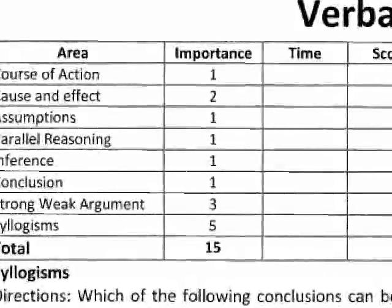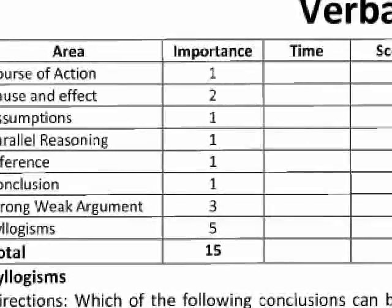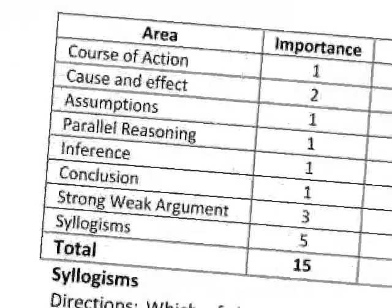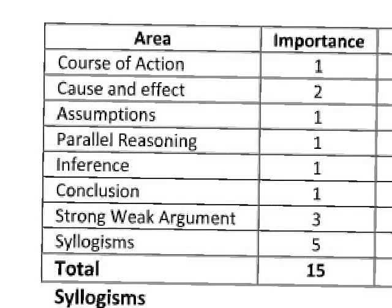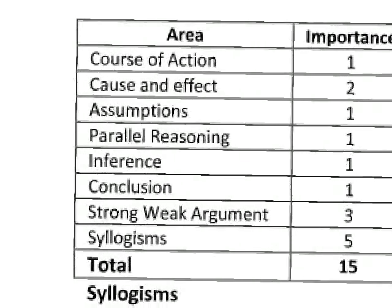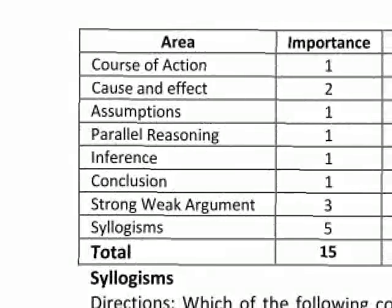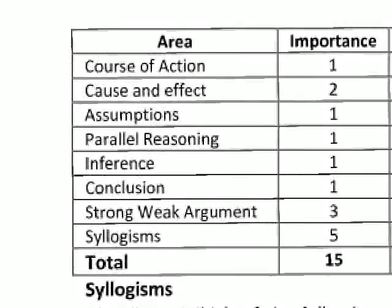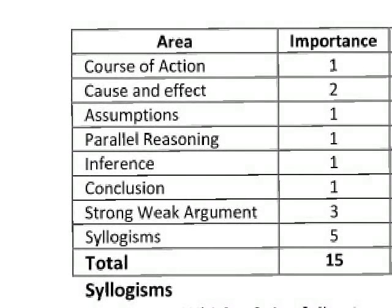The 75 marks break down as: LR is 30 marks, puzzles is 30 marks, and critical reasoning is 15 marks. This video covers that 15-mark paper, which is normally ignored by everybody. The important topics are: course of action, cause and effect, statement assumptions, parallel reasoning, inference, statement conclusion, strong and weak arguments, and syllogism — all together for the 15 marks.